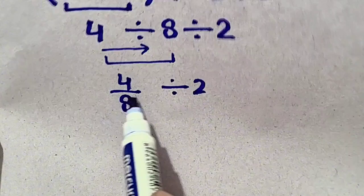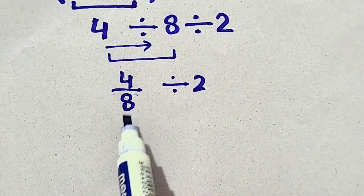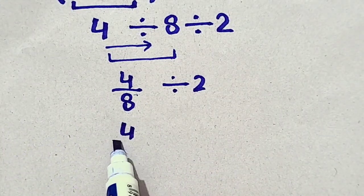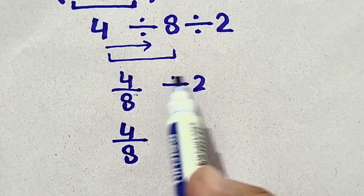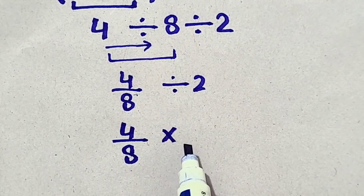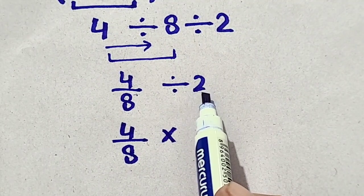Here, we will apply KCF. KCF means keep the first one. So, 4 by 8 as it is. Divided is changed into multiplication, and 2 is flipped. So, it will be 1 by 2.